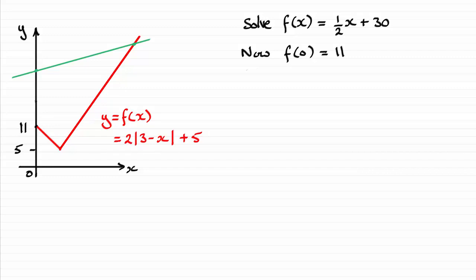And when you're doing a modulus equation, in this case we've got 2 times the mod of 3 minus x plus 5 equals this half x plus 30, we take the positive and negative values inside this modulus. So if we take the positive version of 3 minus x,